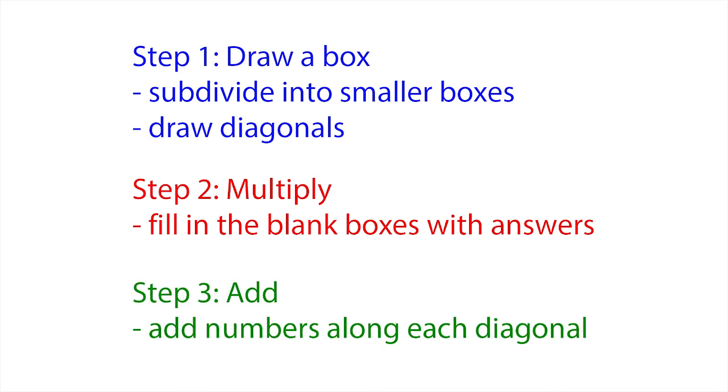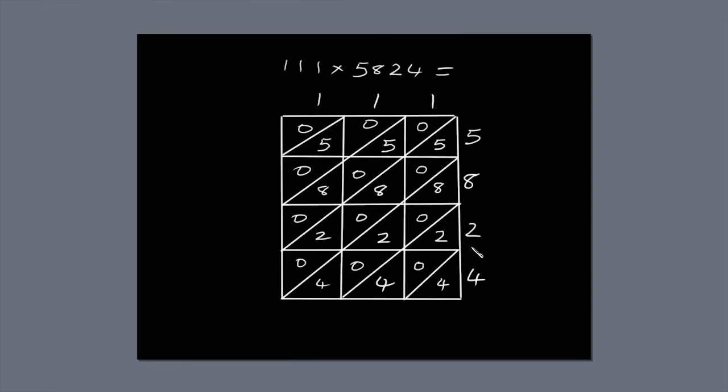Finally, we're going to add up the numbers along the diagonals. I'll circle each diagonal and show you what I mean. The first diagonal only has one number, 4, so write 4 directly below the diagonal. The next diagonal has three numbers: 2, 0, and 4. 4 plus 0 plus 2 is 6. Write 6 below the diagonal.